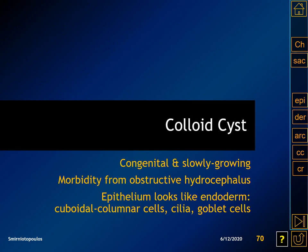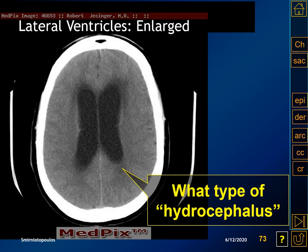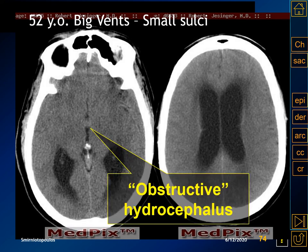Let's turn our attention to colloid cysts. These are congenital lesions that are slowly growing, most commonly presenting in the second, third, and fourth decades. Their primary morbidity comes from obstructive hydrocephalus because of their location at or in the foramen of Monro. The epithelial lining looks like endoderm with cuboidal to low columnar cells, cilia, and goblet cells. The contents of a colloid cyst are very much like mucus. In a classic presentation — a 52-year-old man with difficulty walking, memory problems, incontinence, and a history of colon cancer — we can see enlargement of both lateral ventricles with few visible sulci, a pattern consistent with obstructive hydrocephalus. At a slightly lower section, there is a nearly isodense lesion in the anterior part of the third ventricle, the perfect location for a colloid cyst.